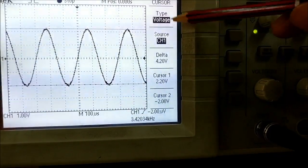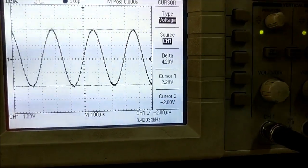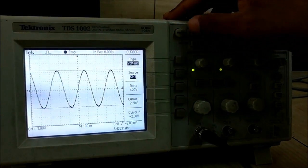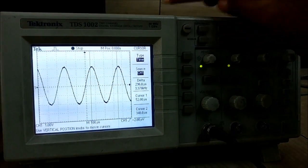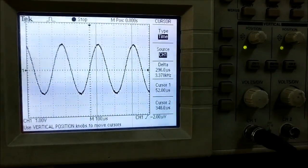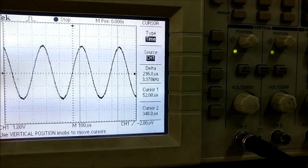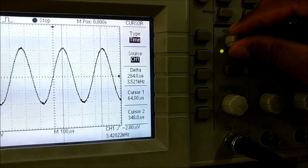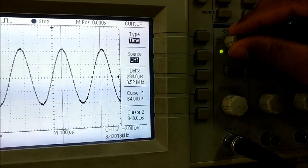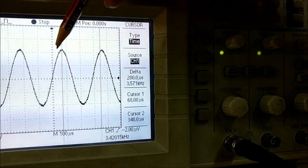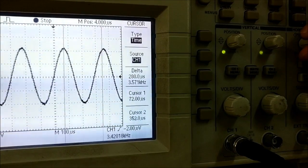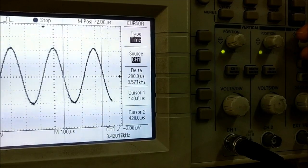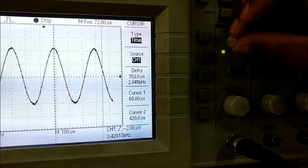Now we want to check the time division or frequency. Press the type button and select time. The cursors will automatically move to vertical position. To check the frequency, move cursor 1 to a reference position at 0 level, then move cursor 2 to complete one cycle.